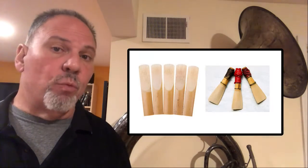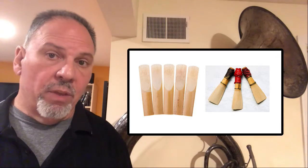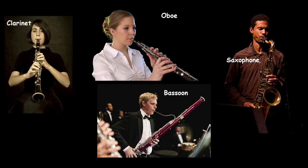Now there are two types of wind instruments. There are woodwind instruments that use a reed, which is usually made of wood, and you blow air through that reed to create a sound. That would be instruments like the clarinet, saxophone, oboe, or bassoon.